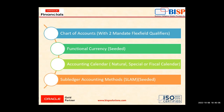In short, subledger accounting is also known as SLAM. So first we will go deep dive on the natural, special, and fiscal calendar.